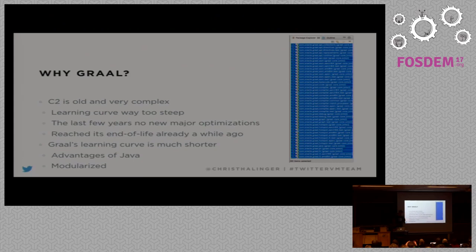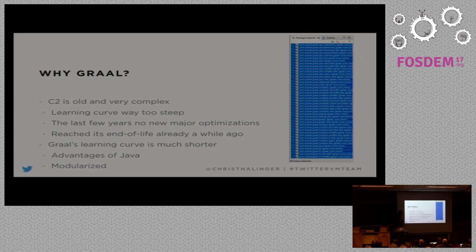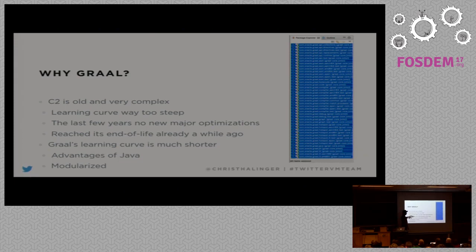Why Graal? Every time I'm here I'm talking about this. I've worked on C2 for a very long time — it's very complicated and it's not really getting better. The learning curve is way too steep. When we hired new people, they'd need to learn for years before they could actually work on C2. In my opinion, there were no major optimizations in the last couple of years — mostly just some intrinsic stuff, no new escape analysis implementation or real improvement with inlining.